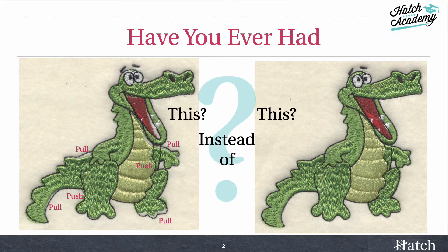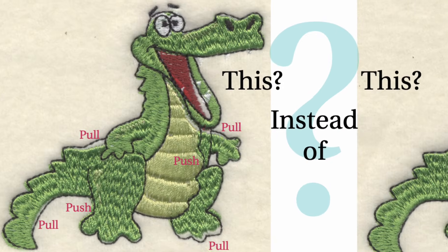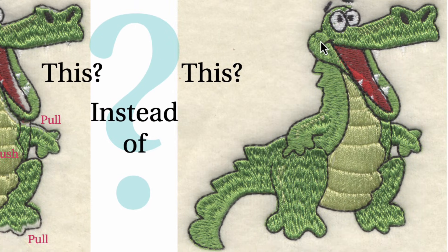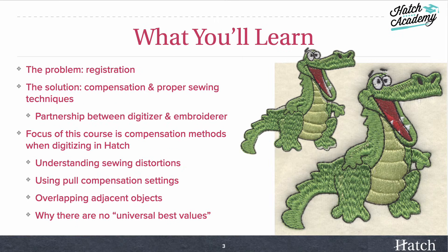So what exactly are we talking about here? Have you ever had a design that looks like this on the left, where we have gaps between areas and big gaps here, and we have parts that are sticking out beyond the outlines, instead of something that's perfectly outlined and perfectly registered, like this one on the right? That's what we'll cover in this course.